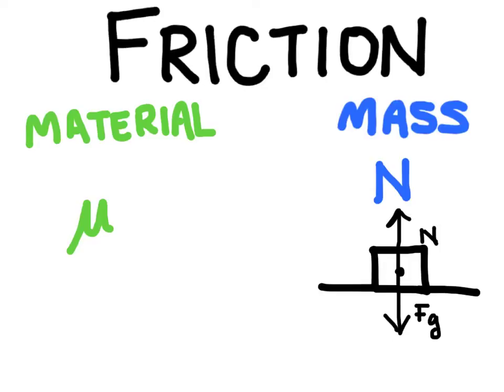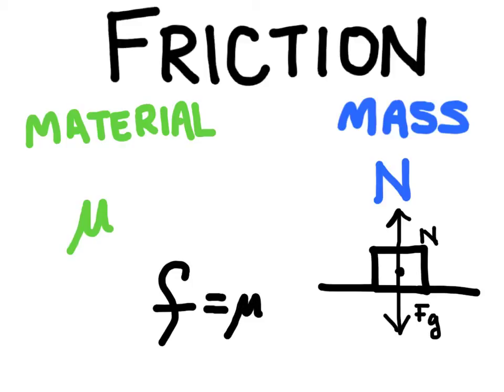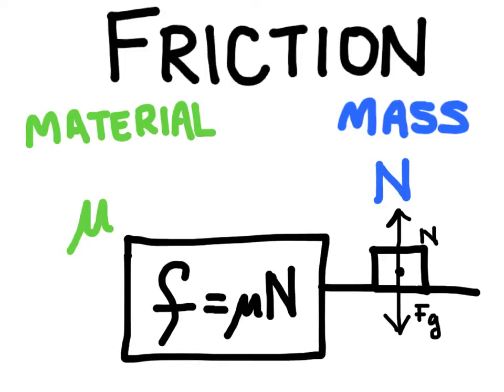We're going to need both of these variables in our equation — the coefficient of friction and the normal force — because friction is dependent on both of them. Here's what the equation looks like: friction (we use the lowercase f) is going to be equal to the coefficient of friction times the normal force. That's our equation to find the force of friction.